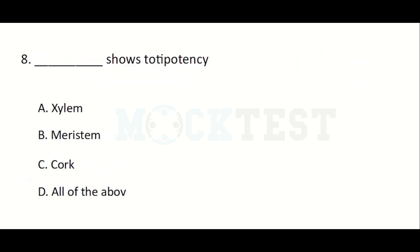Which of the following shows totipotency? Option A: Xylem, Option B: Meristem, Option C: Cork, Option D: All of the above. The answer is Option B — Meristem shows totipotency.